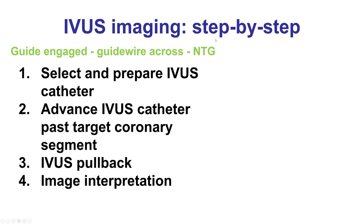These are the steps involved in performing IVUS imaging. The starting point is that the guide is engaged, there is a guide wire across the target vessel and lesion, and nitroglycerin has been given. Nitro is very important because no administration of nitroglycerin may result in coronary spasm that may affect the measurements performed during intravascular imaging.